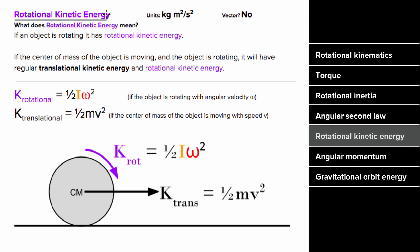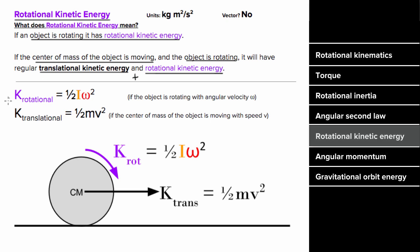What does rotational kinetic energy mean? If an object is rotating or spinning, we say it has rotational kinetic energy. If the center of mass is moving and the object is rotating, the object has both translational kinetic energy and rotational kinetic energy. This is a convenient way to delineate between two types of kinetic energy, and a particularly convenient way to find the total kinetic energy for something that is both moving and rotating.